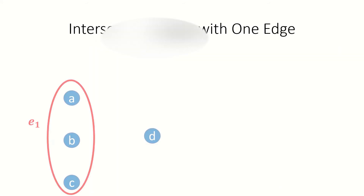Note that an intersecting family can have as little as one edge, for that edge's intersection with itself would be non-empty. In fact, any hypergraph with only one edge will be an intersecting family under our definition.